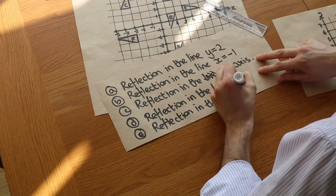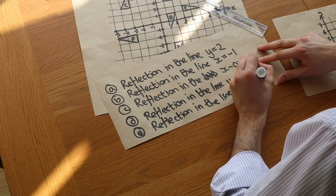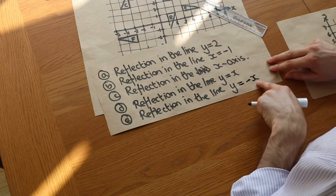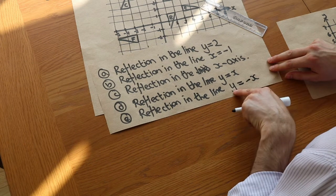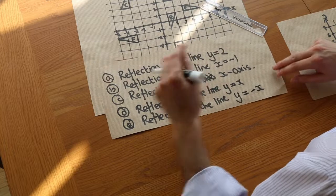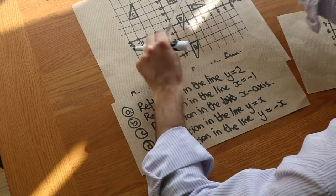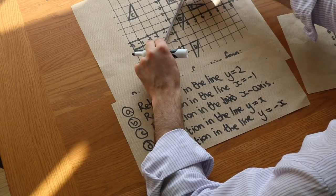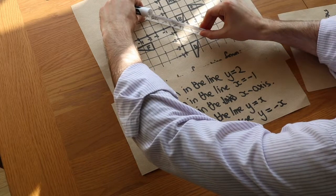And we could write that as either X is minus Y or Y is minus X. So if the X value was, say, 3, Y would be equal to minus 3. So it would be 3 minus 3 as a point on that line. So just remember that this line is Y equals X and this line is Y equals minus X.